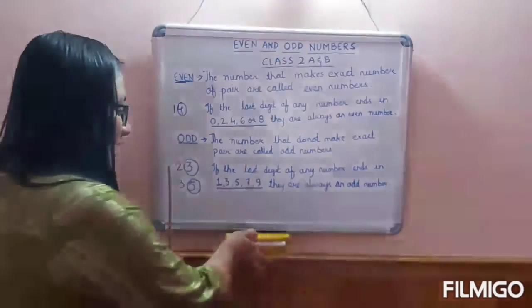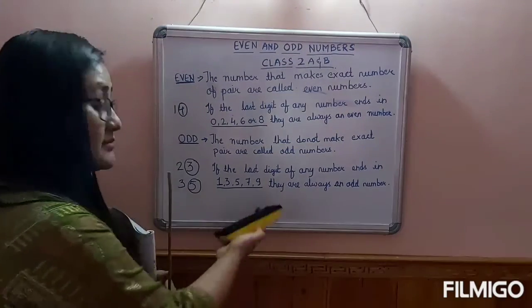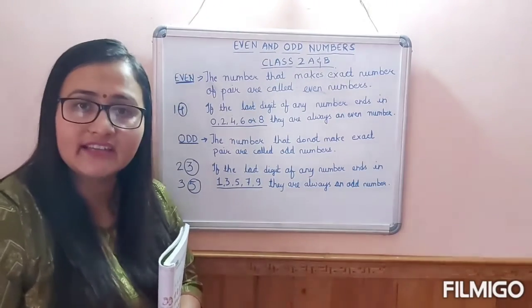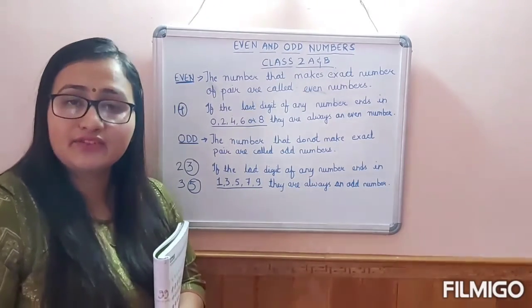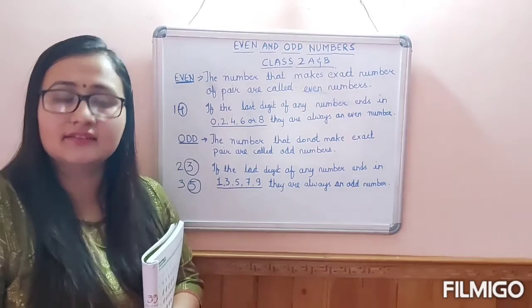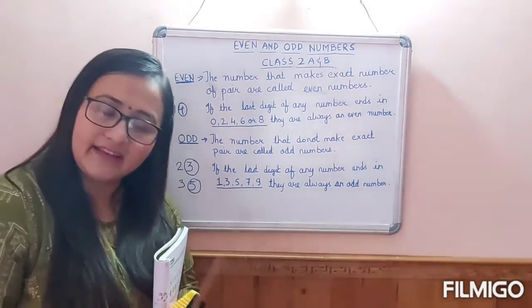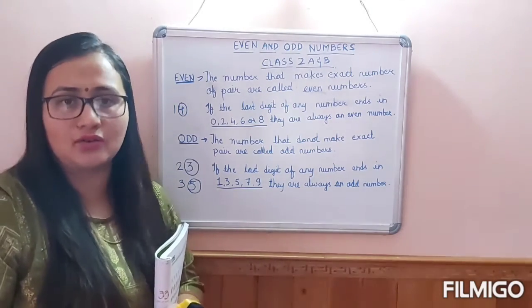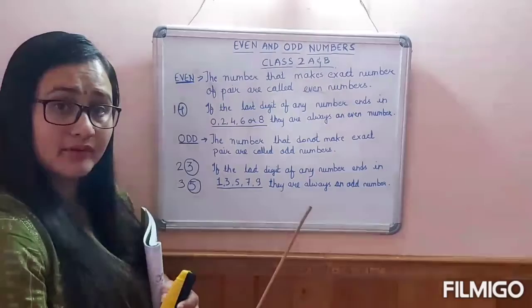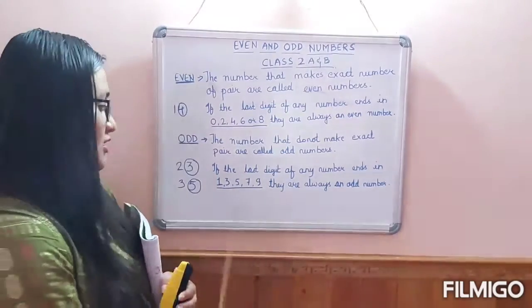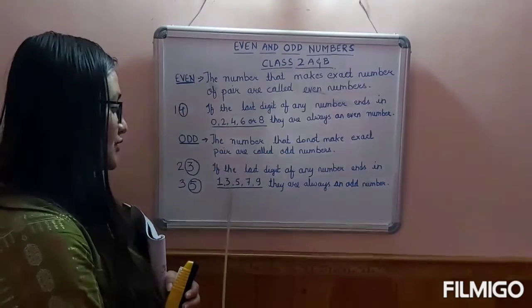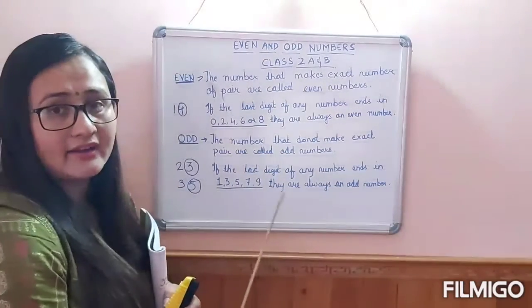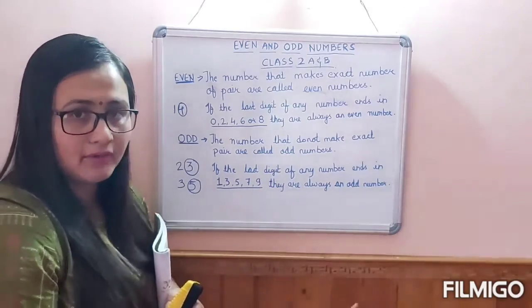After 9, 11 is an odd number, then 13, then 15, then 17, then 19, then 21 — it goes on and on like that. So all the numbers ending with 1, 3, 5, 7, and 9 are odd numbers.